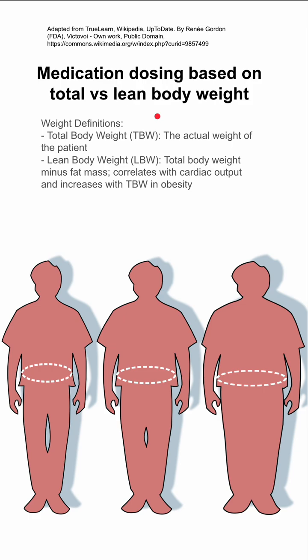Your total body weight is the actual weight of yourself or the patient. Your lean body weight is your total body weight minus the mass of the fat. This correlates with cardiac output and it increases with total body weight in obesity.